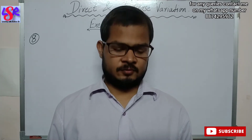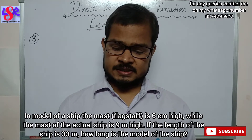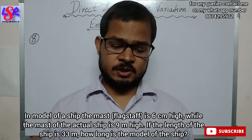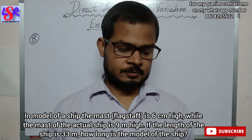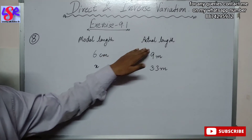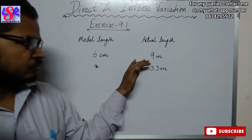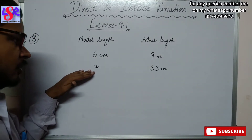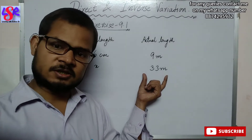In question 8, in a model of a ship the mast is 6 centimeter high while the mast of the actual ship is 9 meter high. If the length of the ship is 33 meter, how long is the model of the ship? Here we are having the model length and the actual length — for the model the mast is 6 centimeter and in actual it is 9 meter. We have to find the length of the model of the ship whereas the actual length of the ship is 33 meter.